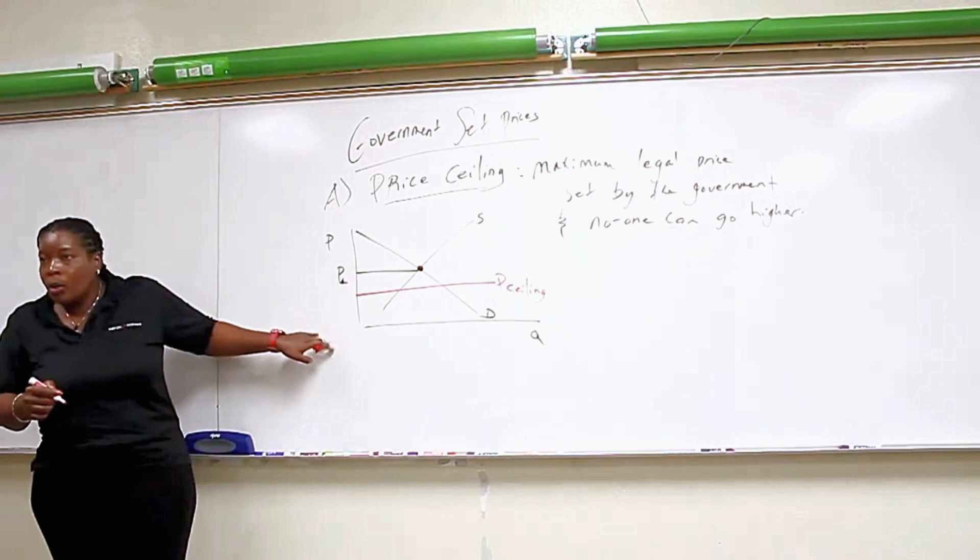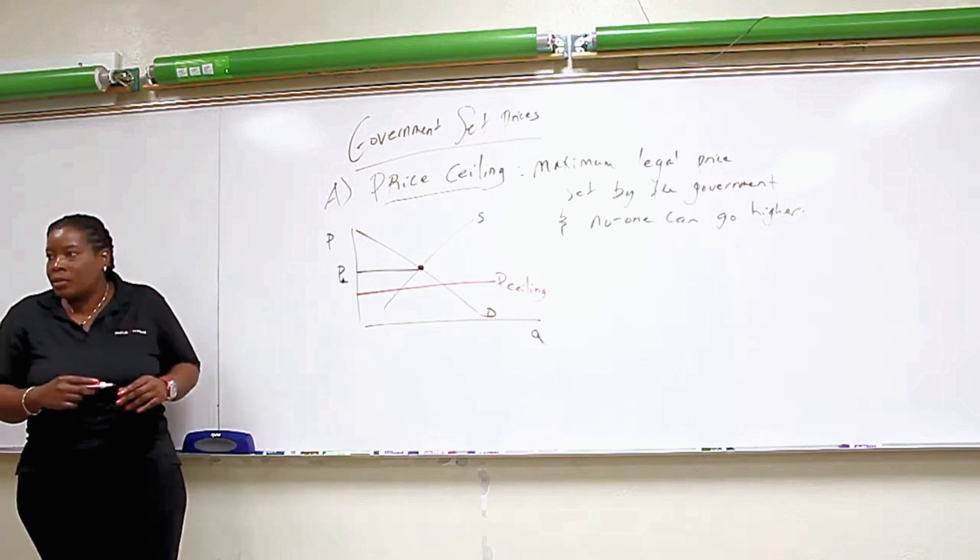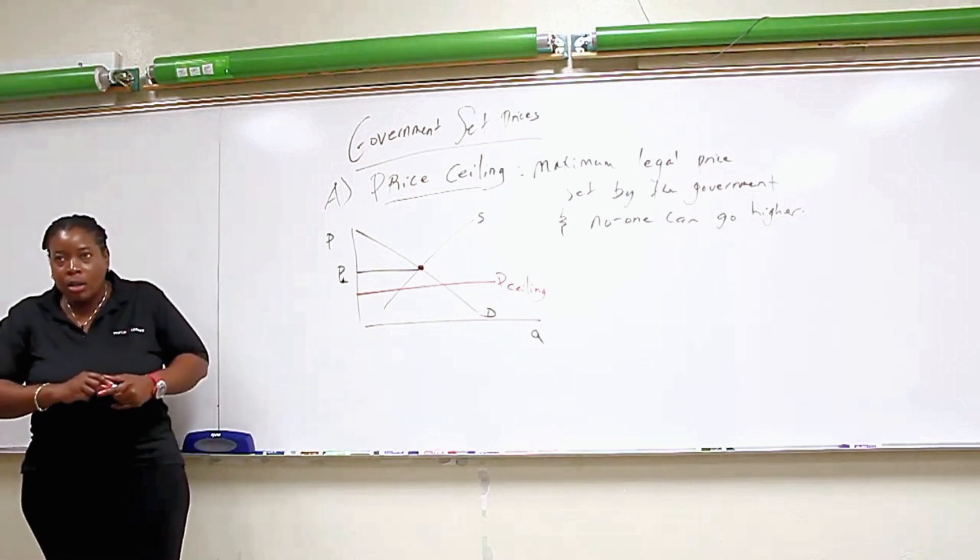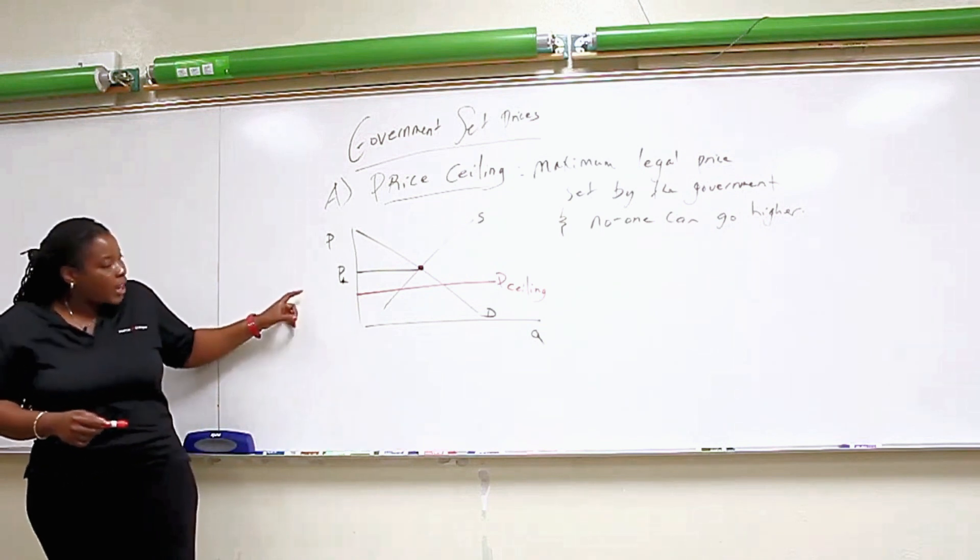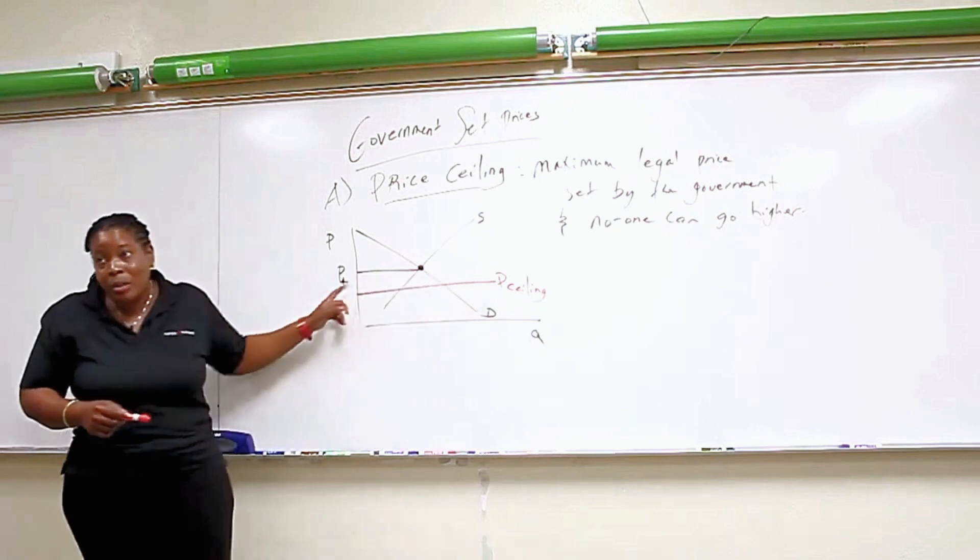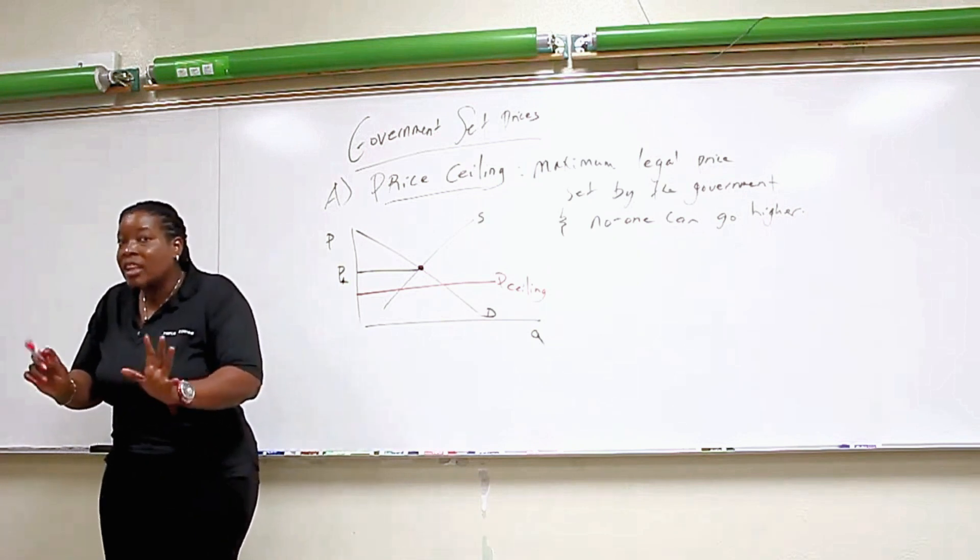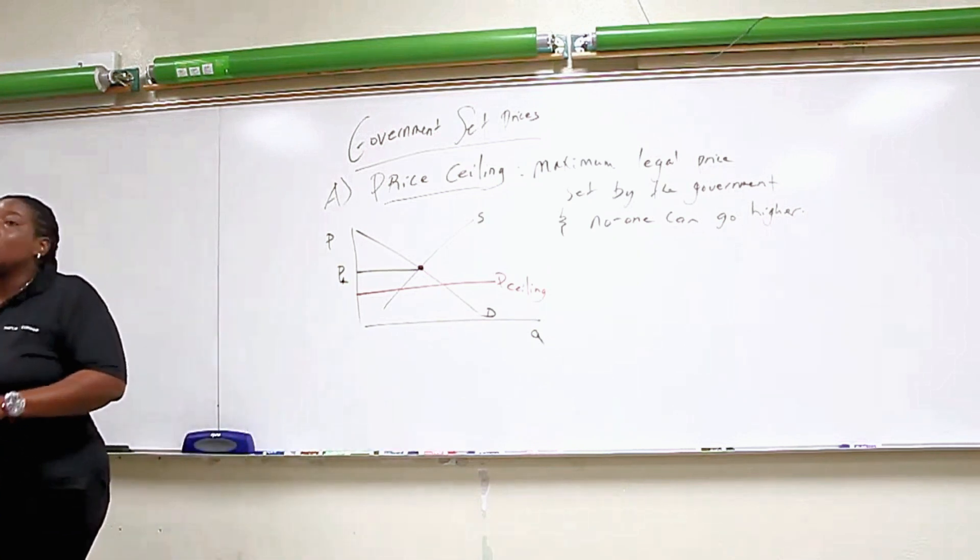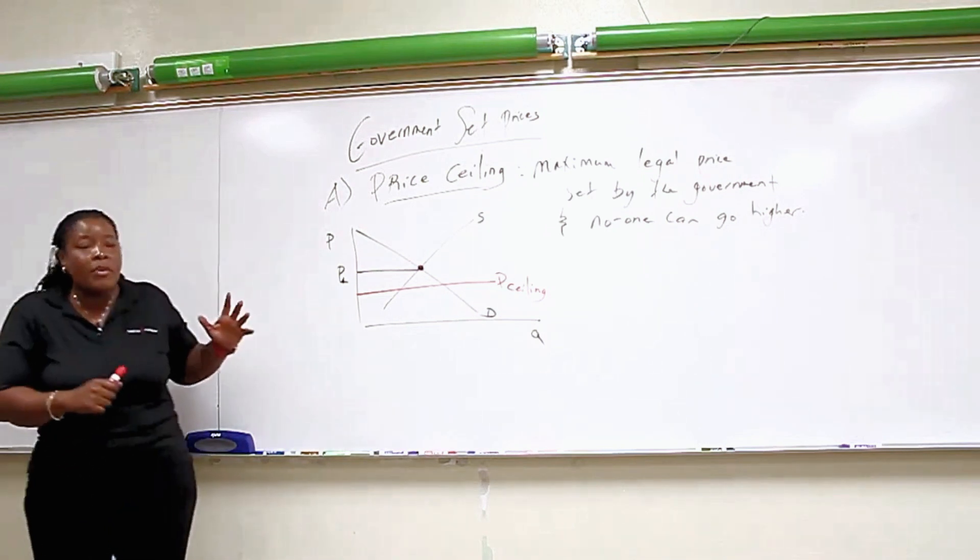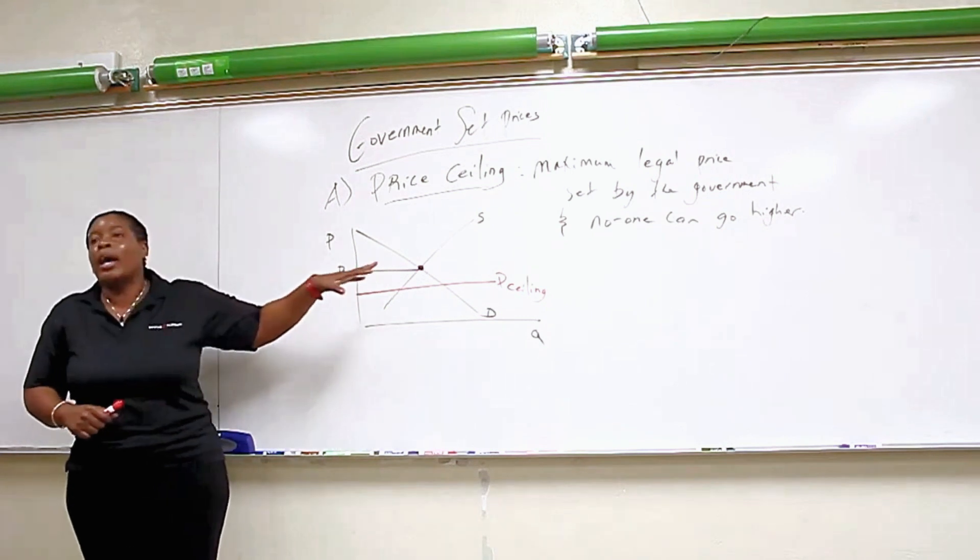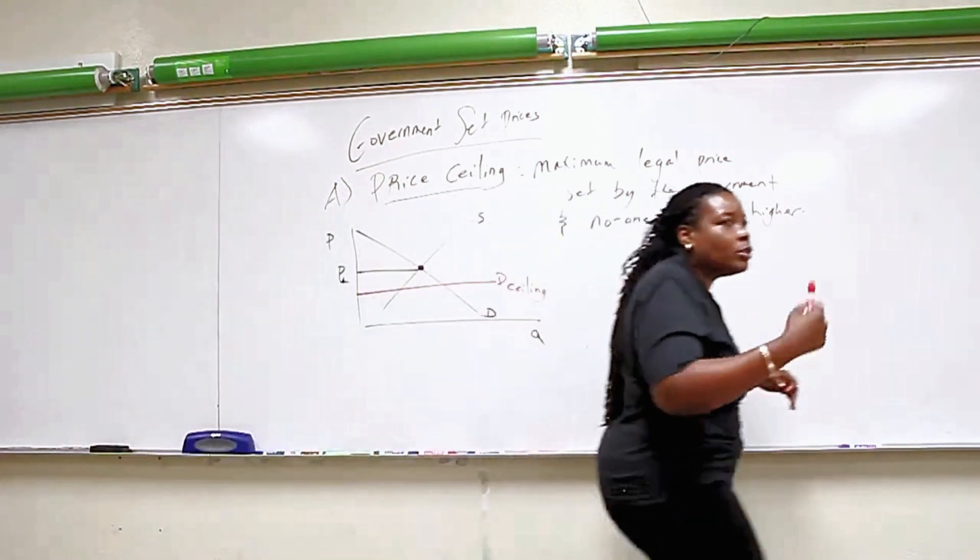If people want to go lower, that's okay, but legally nobody can go higher. If you go higher than this P ceiling, you are breaking the law. The government is not happy with P star. They think that price is too high. They go in and set an effective maximum price. People could go lower, but you cannot go higher legally. That's the idea behind a price ceiling. Not every price that's below equilibrium is a ceiling. We're saying specifically, the government goes in and sets a price below the equilibrium. Usually the motivation is to make the good more affordable to consumers.